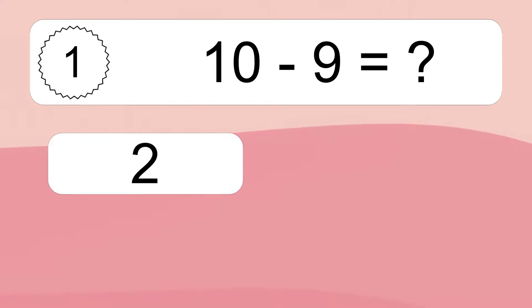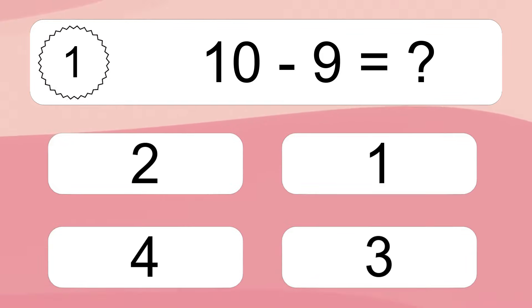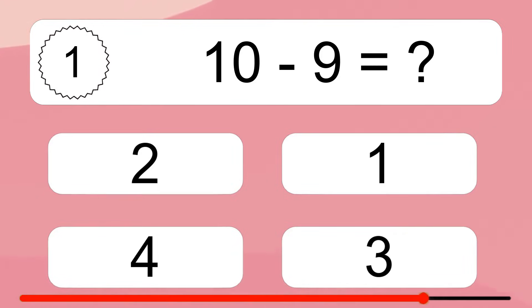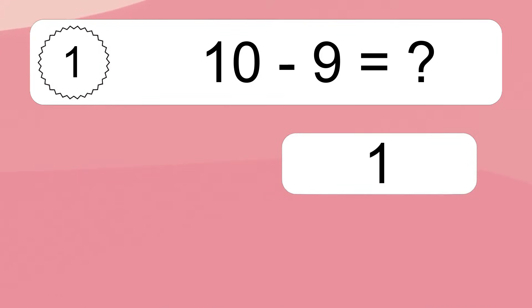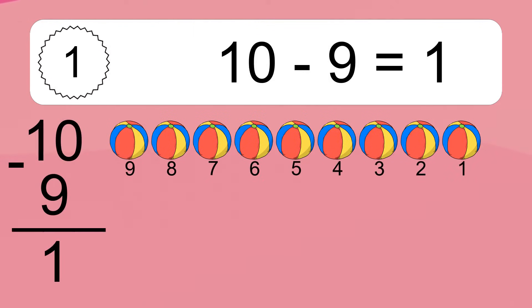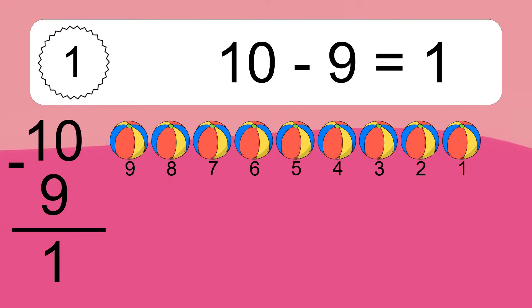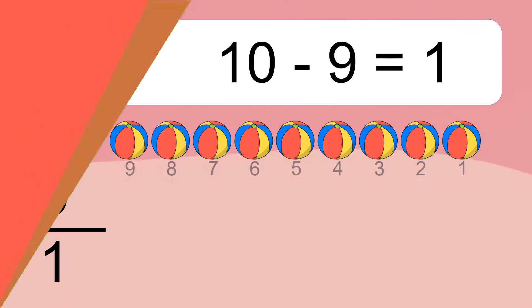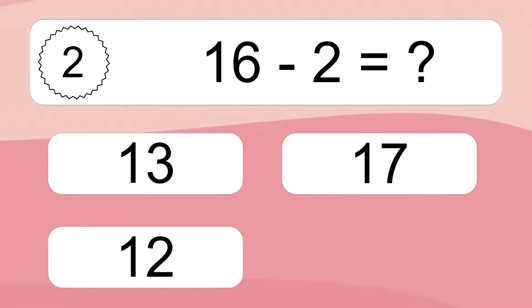10 minus 9 equals what? 10 minus 9 equals 1. Let's count it: 9, 8, 7, 6, 5, 4, 3, 2, 1.